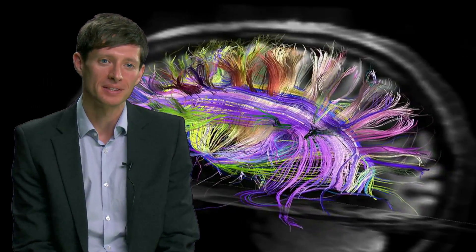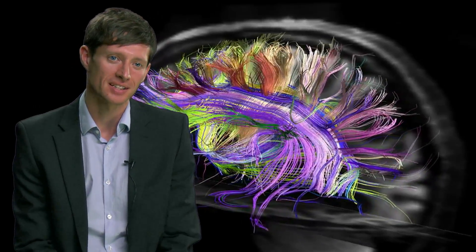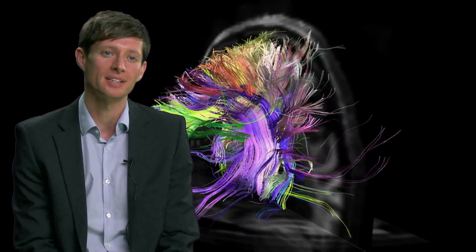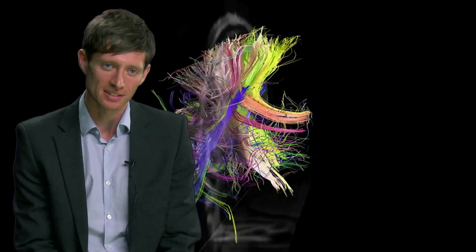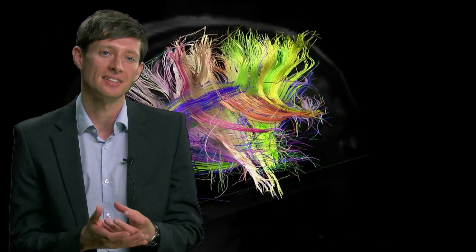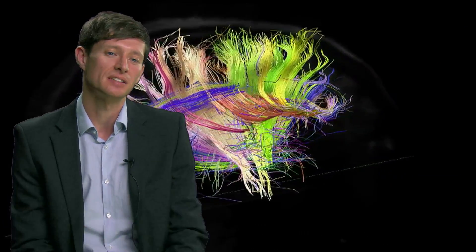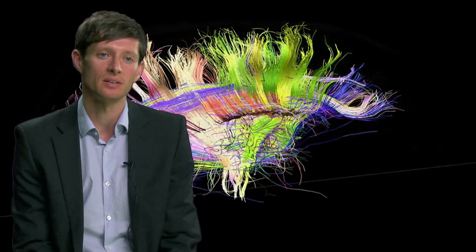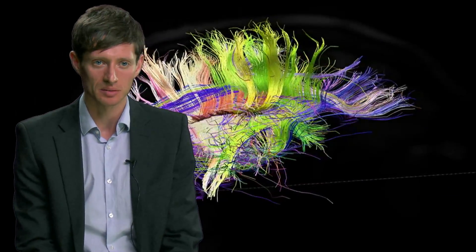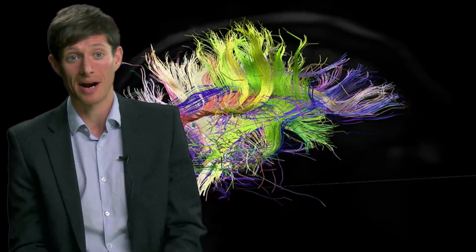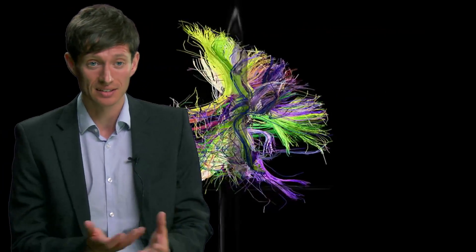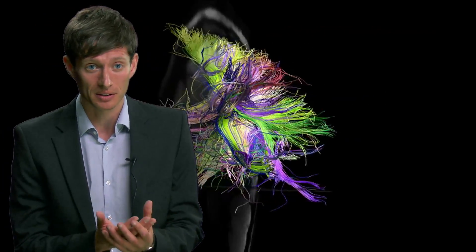The function of a hub would be to constrain and to integrate — to bring activity from different regions in the brain into a common center where the activity can be integrated. That's the function of a hub: to bring disparate activity from different places into something cohesive.